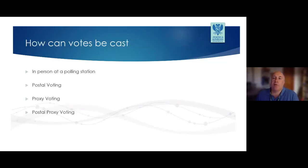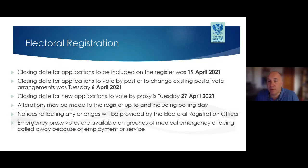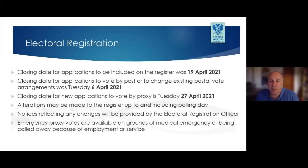Voters can cast their votes in this election in person by presenting themselves at your polling station, by post, by proxy, or by postal proxy. The deadline for registration for this election was midnight on Monday the 19th of April. Anyone aged 16 or over on 6th of May who has the right to vote can vote in this election. If applying by post, they had to register by 5 o'clock on Tuesday the 6th of April. If voting by proxy, the deadline is next Tuesday the 27th of April. Emergency proxy voting can be made on grounds of a medical emergency or being called away by your job, with a deadline of 5 o'clock on polling day Thursday 6th of May.